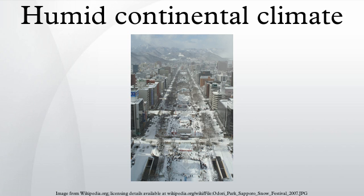The Köppen definition of this climate regarding temperature is as follows: the mean temperature of the coldest month must be below -3°C, and there must be at least four months whose mean temperatures are at or above 10°C. In addition, the location in question must not be semi-arid or arid.